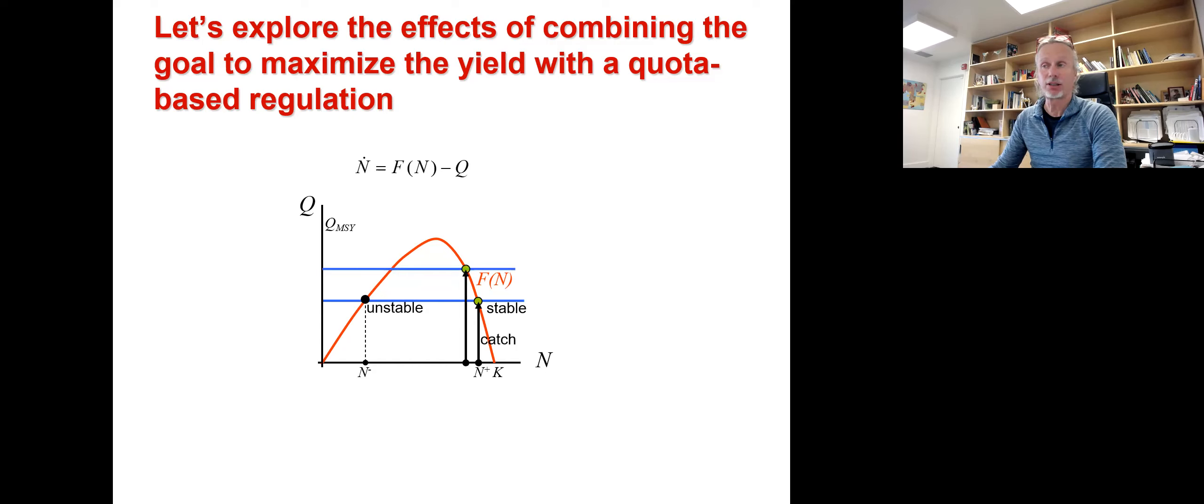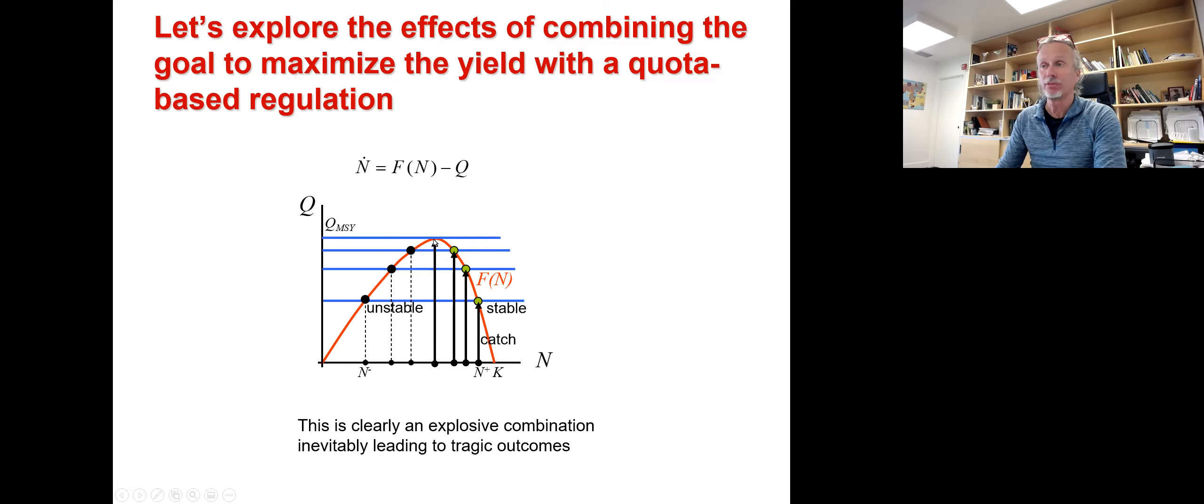We can increase the quota, and we'll get a new equilibrium point, stable, and a new unstable equilibrium point. The N+ will be a little bit to the left, and the N- a little bit to the right. You can see that the range between the stable equilibrium and the unstable equilibrium starts to decrease. We can increase the quota even more, and this range decreases even further. If we want to maximize the harvesting that we can get every year, we go up to this level, and this is an equilibrium point. This would be the maximum yield.